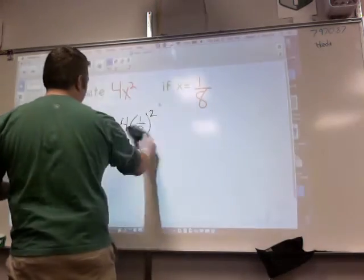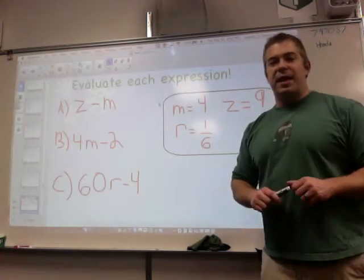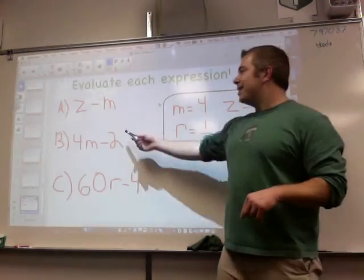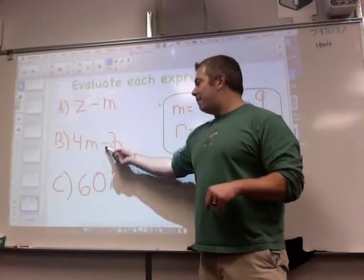You guys have some work for me to do. Let's see what you guys have on deck here. You have to evaluate each expression. So you have Z minus M and you have 4M minus 2.